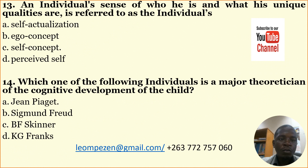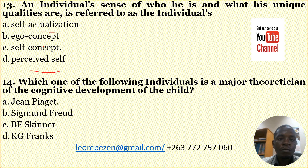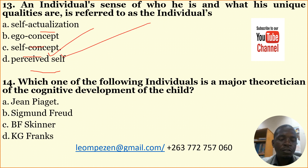Number thirteen: An individual's sense of who he is and what his unique qualities are is referred to as — A: self-actualization, B: ego concept, C: self-concept, D: perceived self. The correct answer is C: self-concept.